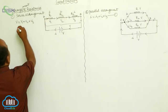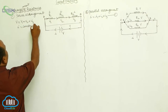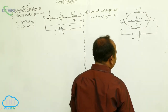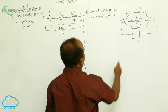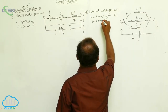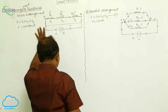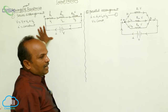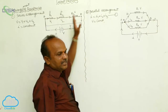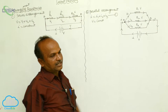In series, current has a unique path — I is constant. The first and second terminals are connected simultaneously to the positive and negative terminals of the battery, so potential is constant in parallel. Always, in the series arrangement, current is constant; always, in the parallel arrangement, potential is constant.